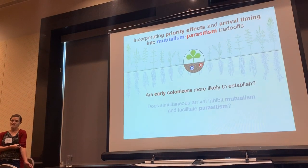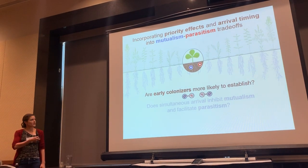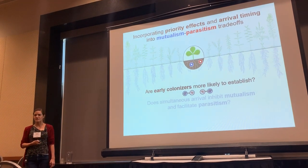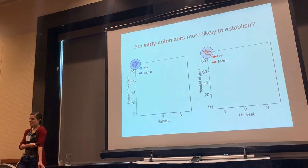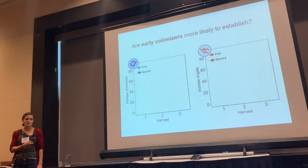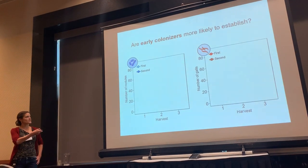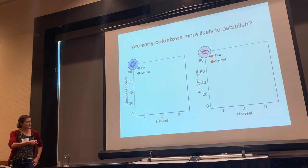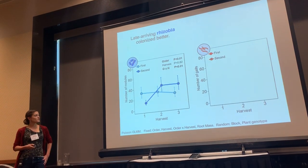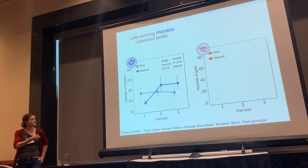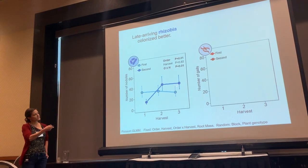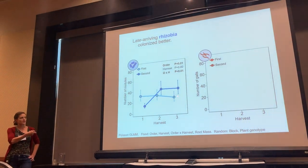I'll start by asking whether early colonizers were more likely to establish, comparing treatments where rhizobia arrived first followed by nematodes versus nematodes first followed by rhizobia. On the left, I'm showing the outcome for mutualism as measured by the number of nodules formed with bacteria. On the right, parasitism outcomes as measured by the number of galls formed with nematodes. The x-axis in both figures is harvest cohort, essentially time. In the context of rhizobial mutualism, we found that late-arriving rhizobia colonized better, contrary to what we expected. Plants inoculated with rhizobia second formed more nodules by the end of the experiment in our third harvest cohort than those inoculated with rhizobia first.